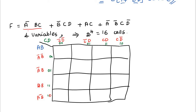Taking term A'BC: A'B row, C is present in CD and CD' columns. B'CD: B' rows (A'B' and AB'), CD column — put 1. AC: A rows (AB and AB'), C columns — put 1. A'B'CD': A'B' row, CD' column — put 1. Now I have to combine all cells. All eight cells are combined together.